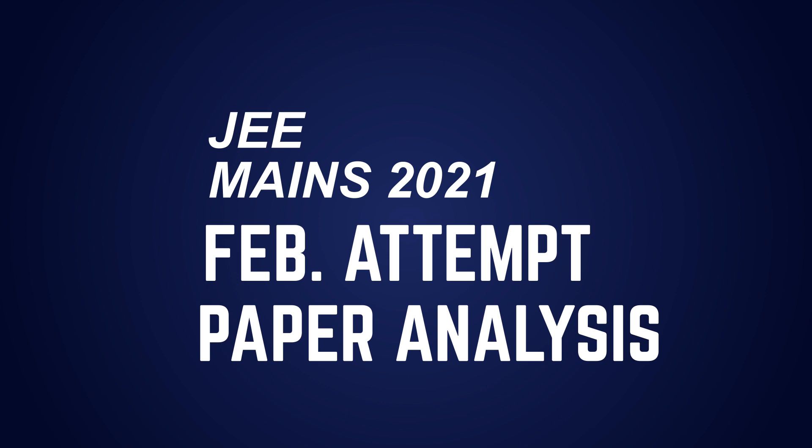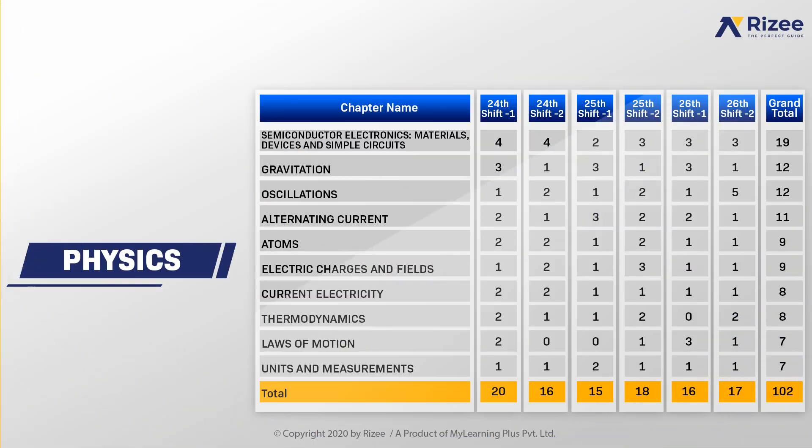If you look at physics, out of 180 questions, 1 or 2 questions came from the top 10 chapters covered in the anticipated question models, and these questions came consistently from all shifts. Semiconductor electronics is a standout chapter where 2 to 4 questions came from all shifts, receiving the highest focus in physics.